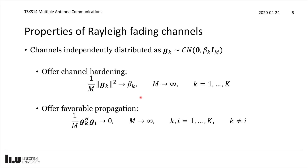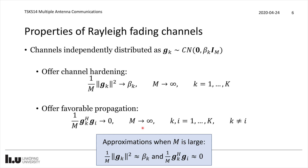Even more important is the asymptotic favorable propagation property. If we take the inner product between two different channel vectors g_k and g_i and divide by M, this is also a sample average — each term is one entry from g_k times one entry from g_i. By the law of large numbers, this converges to the mean value of each such product. Since g_k and g_i are independent with mean zero, that mean value is zero. So for IID Rayleigh fading, the squared norm over M converges to β_k, and the inner product over M converges to zero.